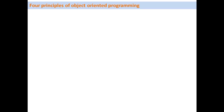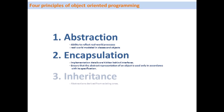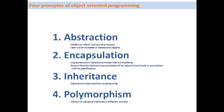ABAP Objects follows the four basic principles of object-oriented programming: abstraction, encapsulation, inheritance, and polymorphism. Abstraction is the ability to reflect real-world processes in a programming language. For this purpose we have attributes, methods, and events, which we use in ABAP Objects to create programs that reflect real-world processes.